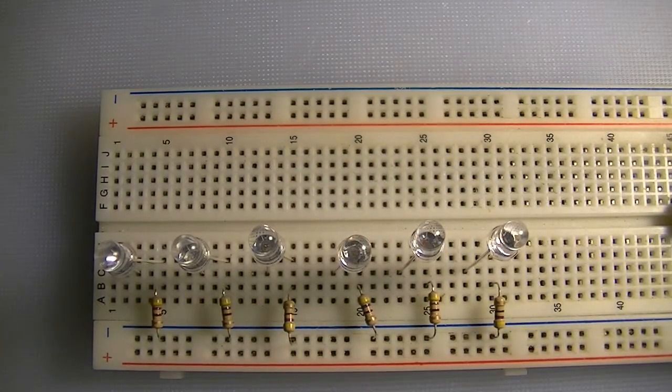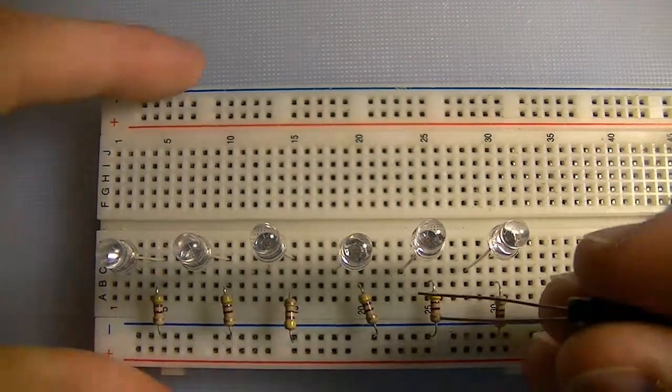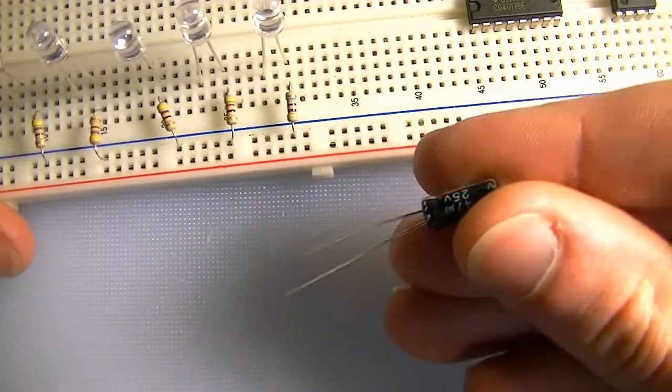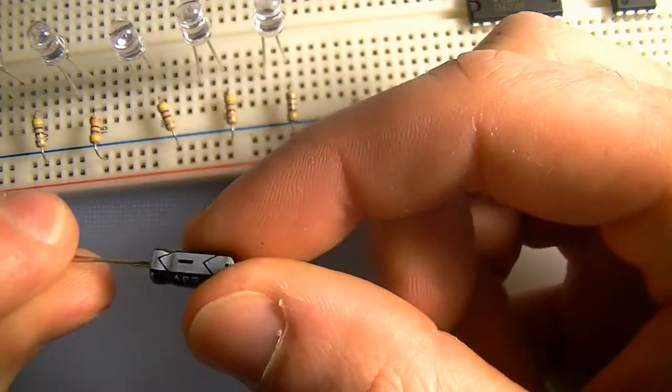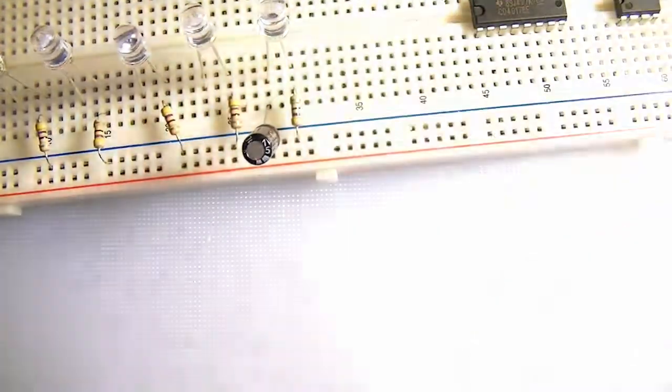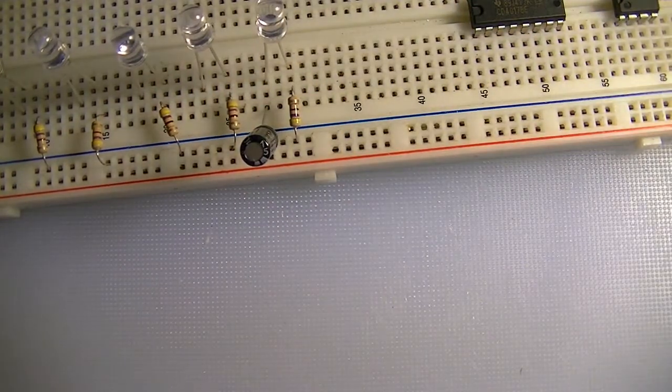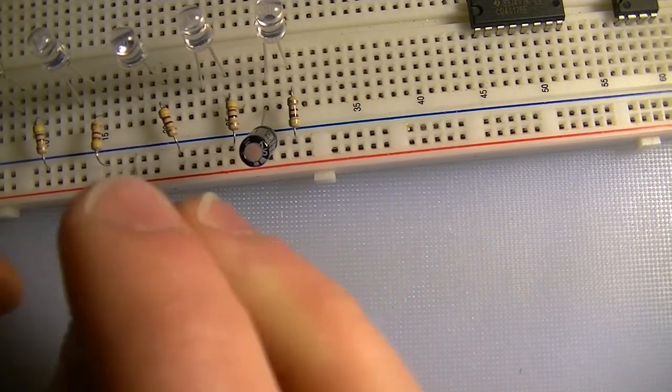Now we're going to put our 47 microfarad capacitors in. These will make the LEDs fade. Long lead to the LED, short lead to ground, and you can just bend them away like that because of the difference in the lengths of the leads.